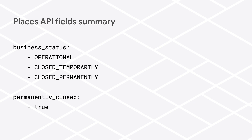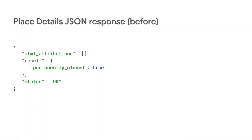This new field will replace an old field called Permanently Closed. Before now, the only states represented in the Places API were permanently closed or not, as indicated by the boolean flag permanently_closed in our Place Details and Place Search endpoints.